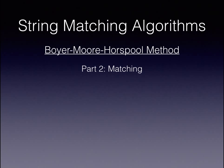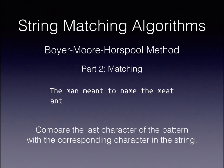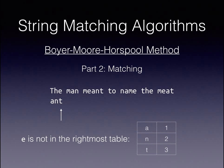The second part of the Boyer-Moore-Horspool method is matching the string. We start by aligning the pattern and the string as before, but instead of comparing the first character, we start by comparing the last character of the pattern with the corresponding character in the string. In this case, T and E do not match, so we look to see if E is in the rightmost table. E is not in the rightmost table, so we shift the pattern past it entirely.